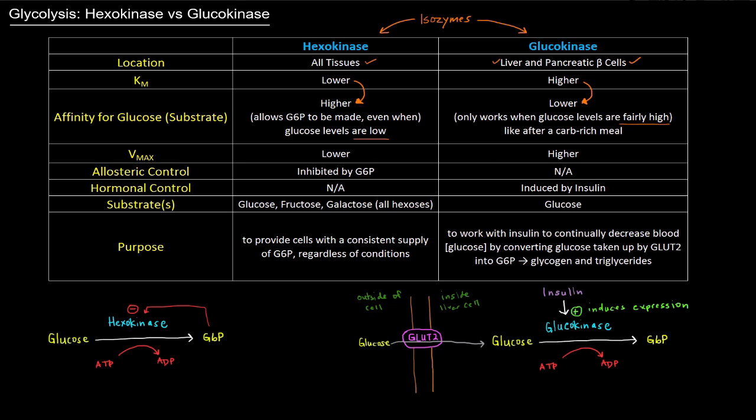As far as their Vmax, hexokinase has a lower Vmax — it doesn't work at as high a maximum velocity — whereas glucokinase catalyzes the reaction faster.